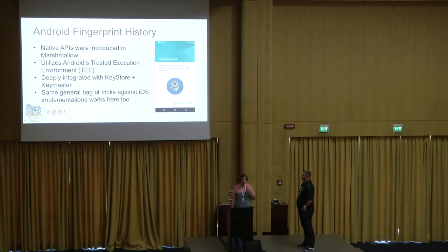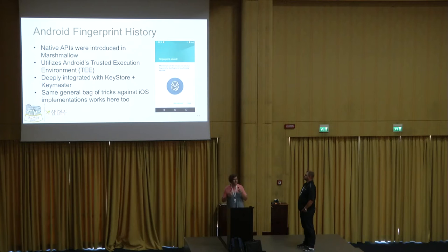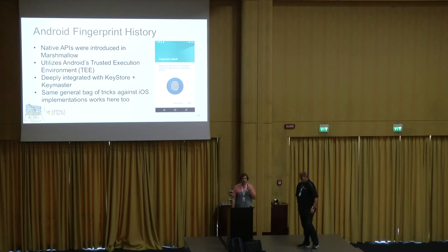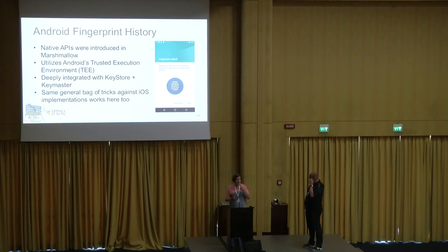In terms of the Keystore and Keymaster service, Android gives you — especially in Marshmallow — hardware-backed storage that's been around since Android 4.3, but got a lot better in Marshmallow with more cryptographic primitives. In terms of the general ways to bypass these implementations, especially from developer-introduced issues, it's a similar bag of tricks. When we do the demos today, we won't do each one for iOS and Android separately because there's a lot of replication.